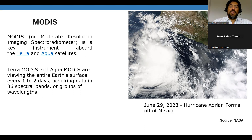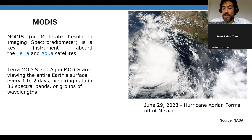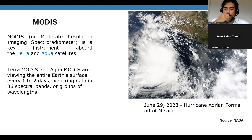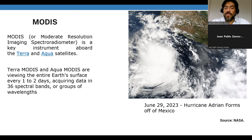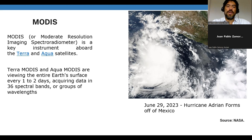For example, this is a MODIS image taken on 29 June of this year showing Hurricane Adrian, which became the first hurricane of the 2023 Eastern Pacific hurricane season, located off the coast of southern Mexico.